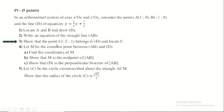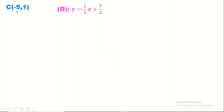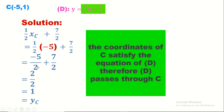Show that point C(-5, 1) belongs to the straight line D. To prove C belongs to D, its coordinates must satisfy the equation of D. Computing: half × (-5) + 7/2 = -5/2 + 7/2 = 2/2 = 1, which equals yC. So the coordinates of C satisfy the equation of D. Therefore D passes through C.